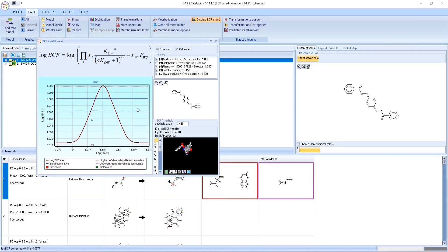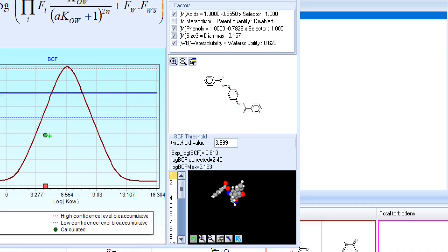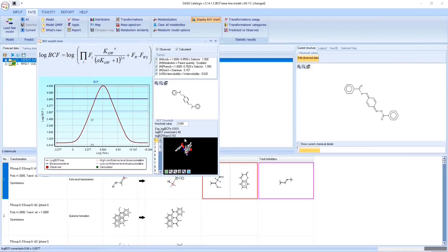As can be seen, the molecular size of the chemical reduced the BCF max. However, the predicted value is still higher than the observed one.